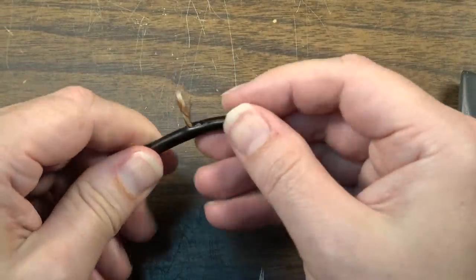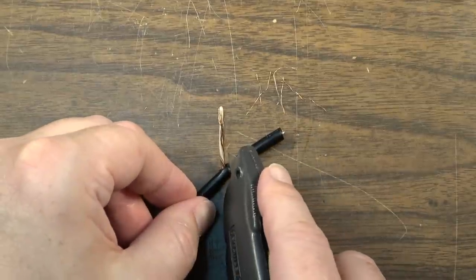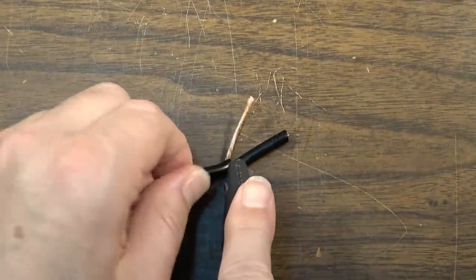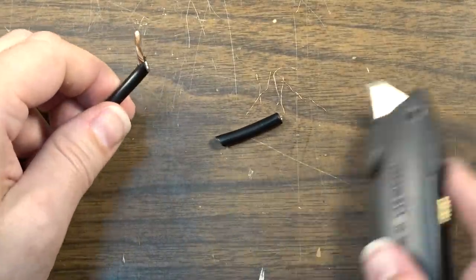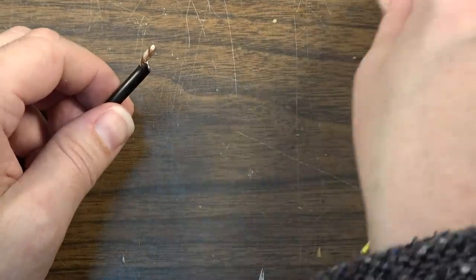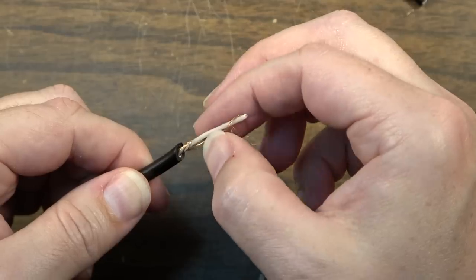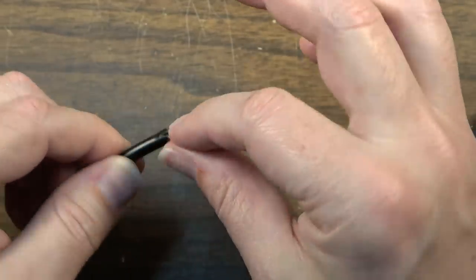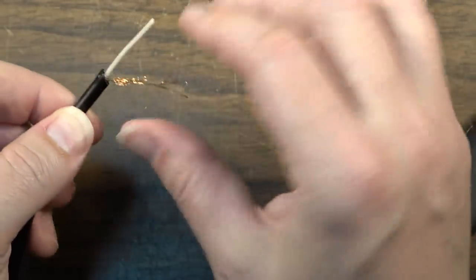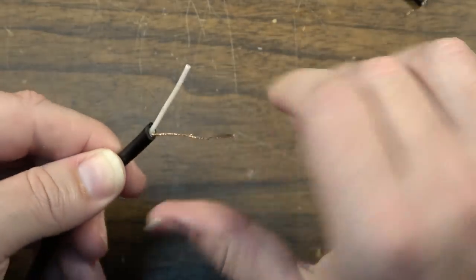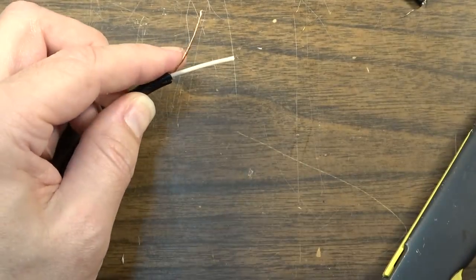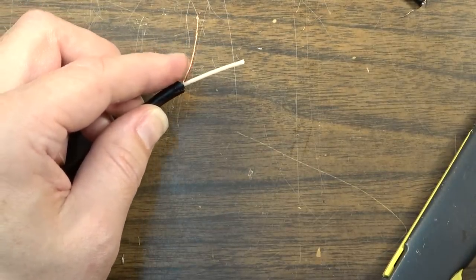Then you peel it back like so. Cut what you don't need off right down here close. And again, don't cut over your antique furniture. You want to cut over something you don't care about. So we're just going to twist this up. We'll also have to strip this back some, and we'll deal with that in just a moment as well.